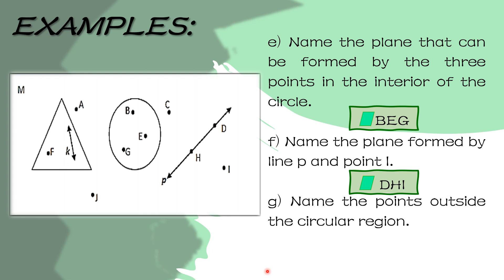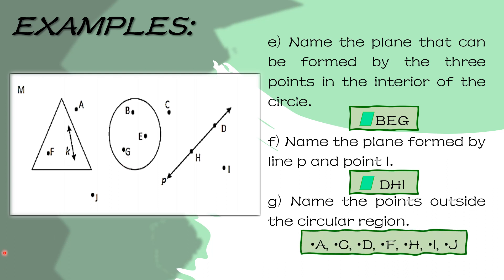Next, name the points outside the circular region. So pangalanan daw natin yung mga points na nasa labas ng circle. Meron tayong tatlong points sa loob ng circle and those are points B, E, at G. So ano yung mga points na wala sa loob ng circle? Those are the points A, C, D, F — dahil ang F ay nasa loob ng triangle at wala sa circle — H, I, and J.